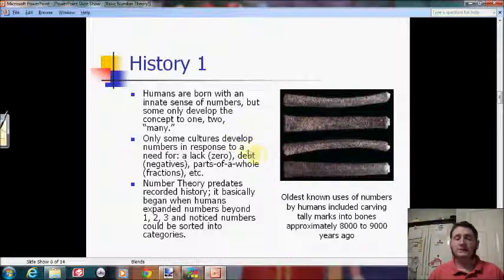Only some cultures would develop certain types of numbers. For example, if you don't need a way of talking about a lack, I don't have any sheep, then you're not going to develop zero. If you don't have debt, you owe me a sheep, then you're not going to have negatives. Parts of a whole, it's maybe easier to think about a half a loaf of bread. In traditional Western history, the Egyptians had basic fractions like a half and a third, yet it wasn't until the late Middle Ages or early Renaissance that Europeans really started to have any sort of use for zero or negatives. It was basically at the same time that they were absorbing the Hindu-Arabic numerals, they also got zero and negatives.